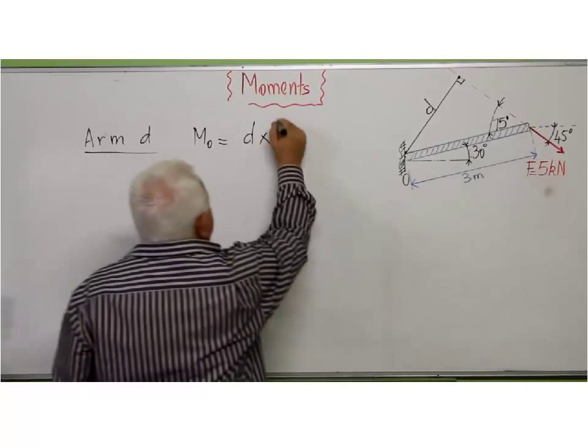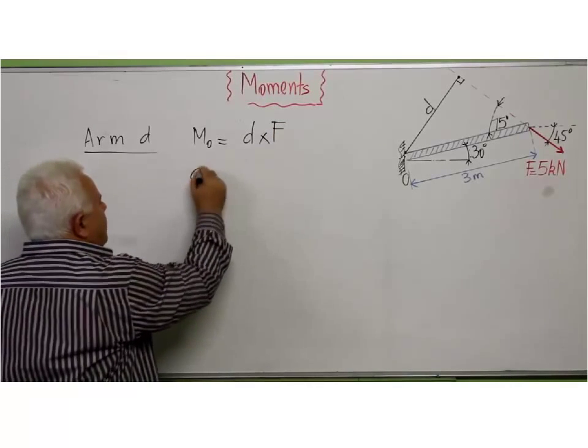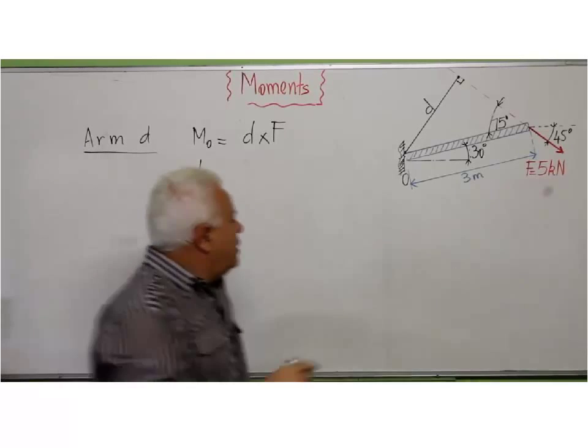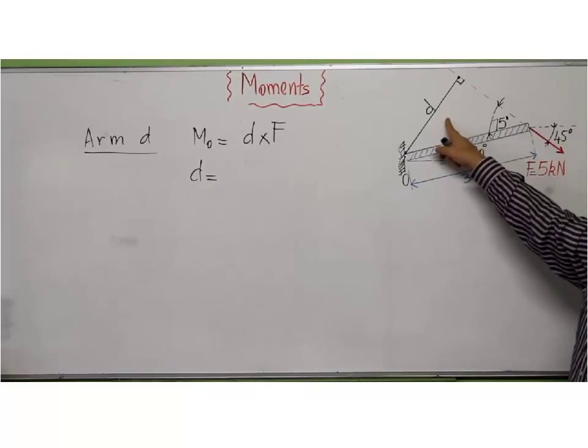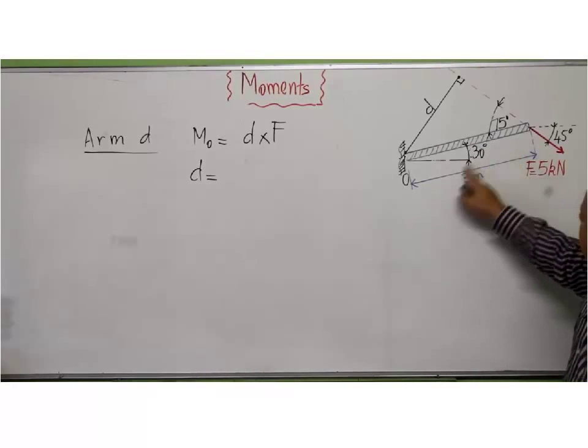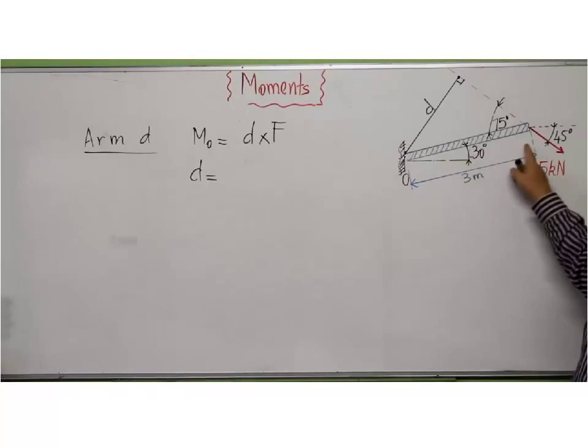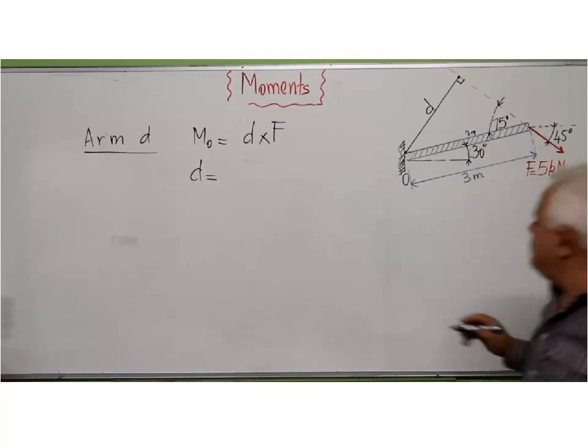Now what's D? This distance - I have the angle 75 degrees and D is opposite to 75, so this distance here we have is three meters, so it's 3 sin 75 degrees.